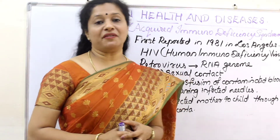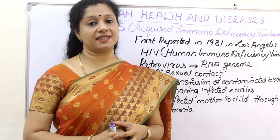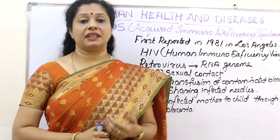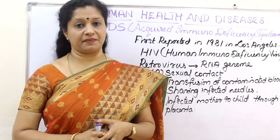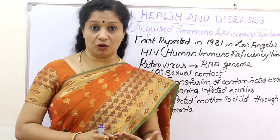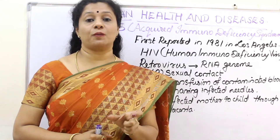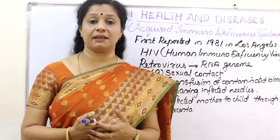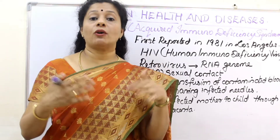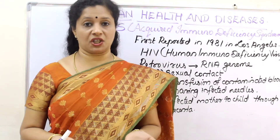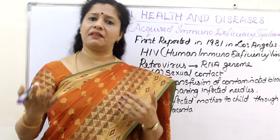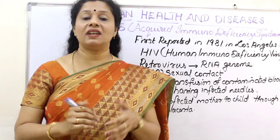The full form of AIDS is Acquired Immunodeficiency Syndrome. That is, we are acquiring over a lifetime a deficiency of our immune system. Deficiency means our immune system is not able to function as normal. And syndrome means a collection of symptoms. Because of the immune deficiency, we fall sick quite often or we are susceptible to many infections around us, so we get a lot of symptoms one after the other — different infections. So it is collectively called a syndrome.